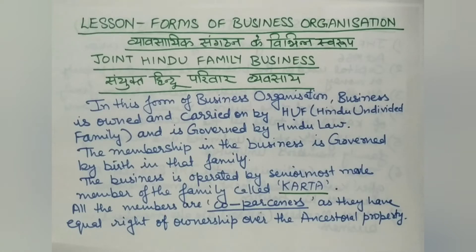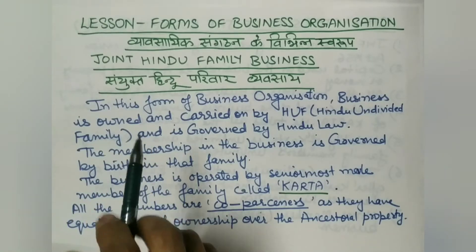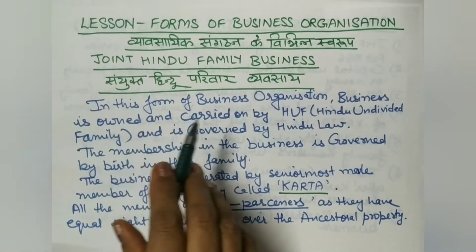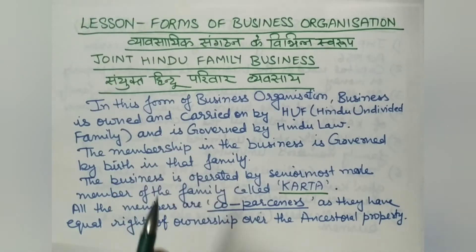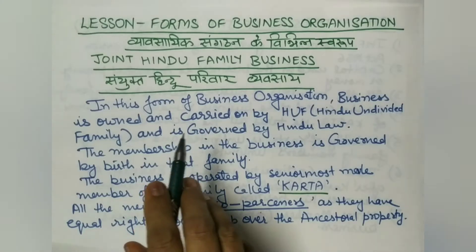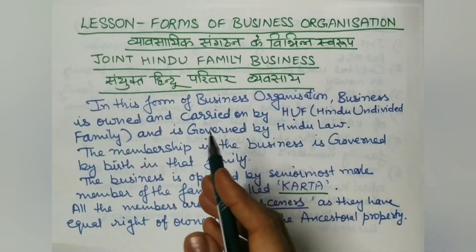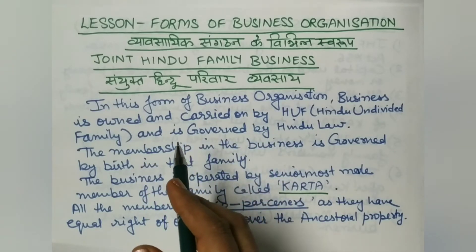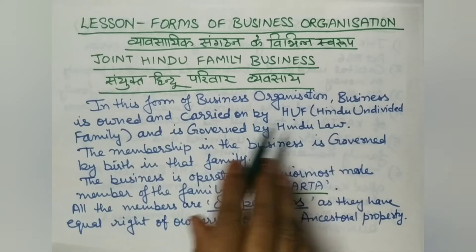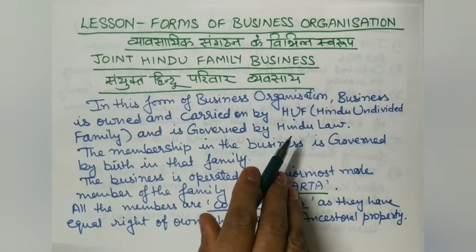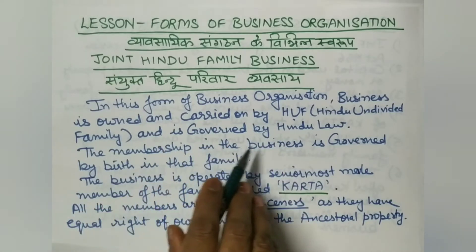Hello and welcome to Commerce Made Easier. In today's lecture of Business Studies Class 11, we will continue the chapter Forms of Business Organization. Today we will discuss the second form of business organization, that is Joint Hindu Family Business. In the previous lecture we discussed sole proprietorship, and now we move to this new topic. This business is owned and carried on by a Hindu undivided family and is governed by Hindu law.